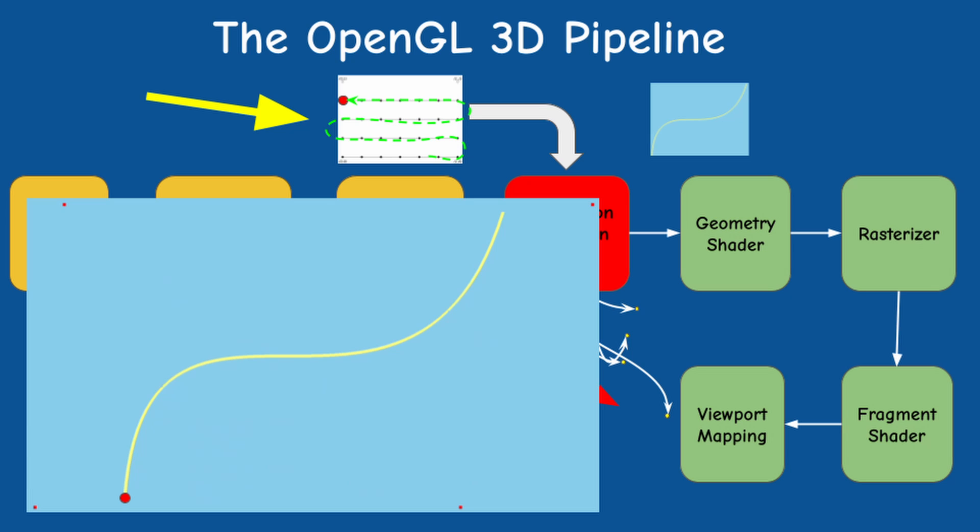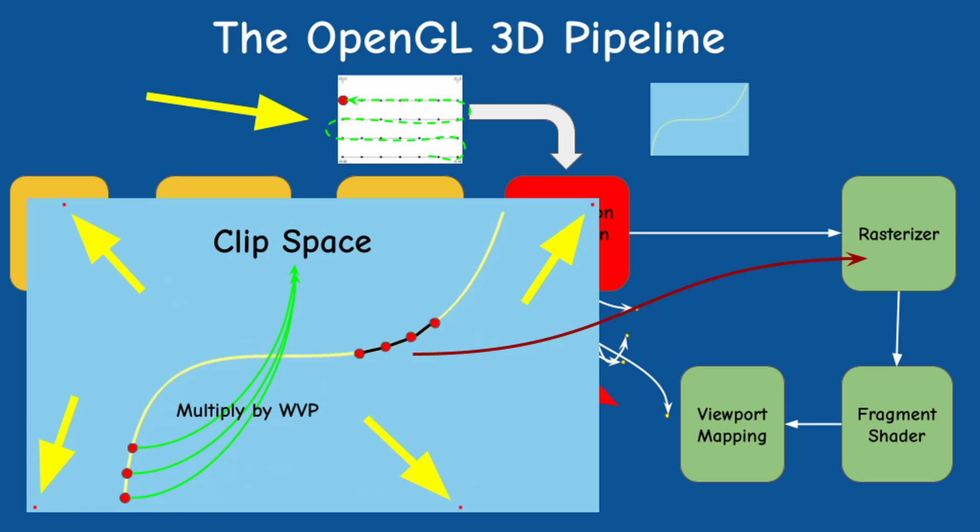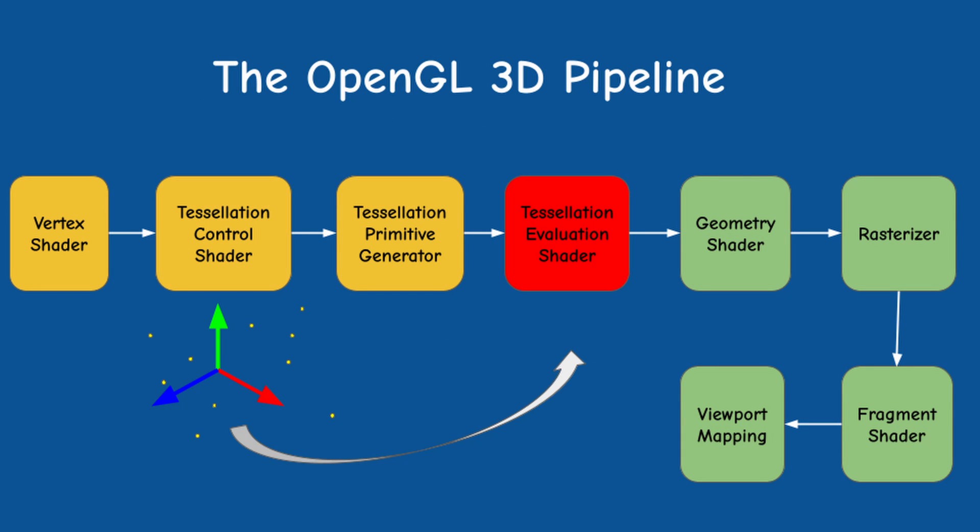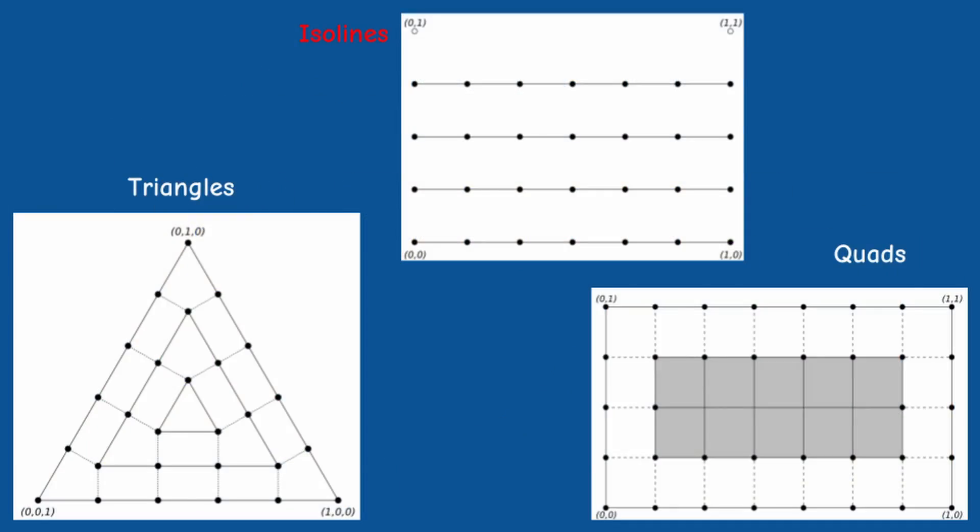In this video we will interpolate between the vertices of the patch using the output from the tessellator. The results will be transformed all the way to clip space which is why I said that we should avoid this in the VS. The output from the TES is assembled into lines or triangles depending on the tessellator algorithm and then sent on to the GS if it is present or directly to the rasterizer if there is no GS.